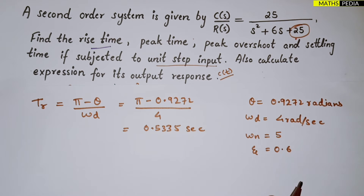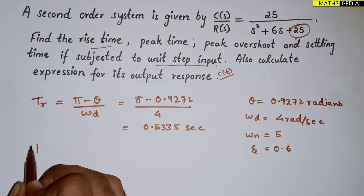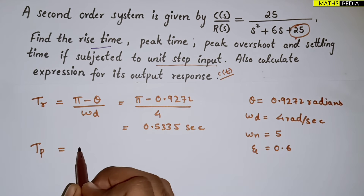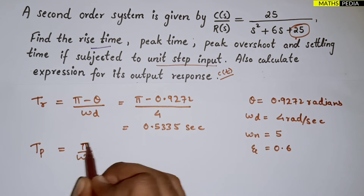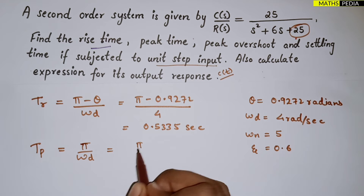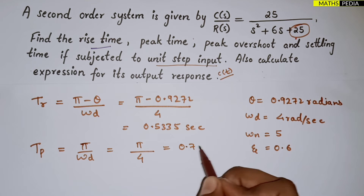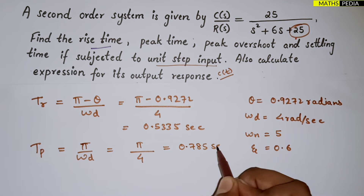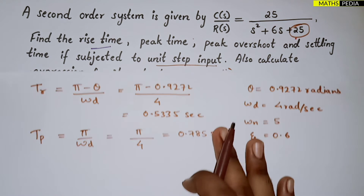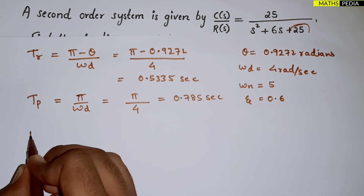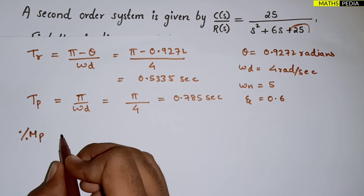Next, we go for peak time Tp. The formula is π / ωd. With ωd = 4, Tp = π / 4 = 0.785 seconds.